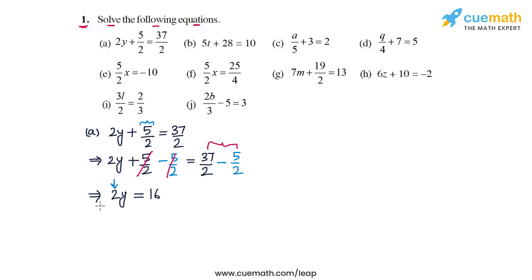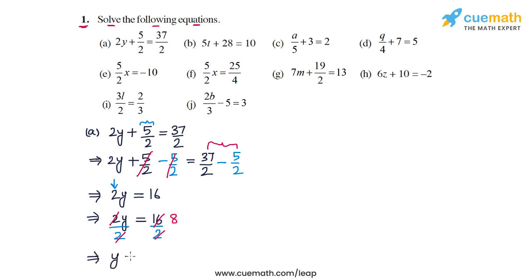The next step is to get rid of this 2 by dividing both sides by 2. So 2y divided by 2: the 2s cancel out on the LHS, and on the RHS we have 16 by 2, which is 8. We are left with y is equal to 8. So the solution in part a is y equals 8.